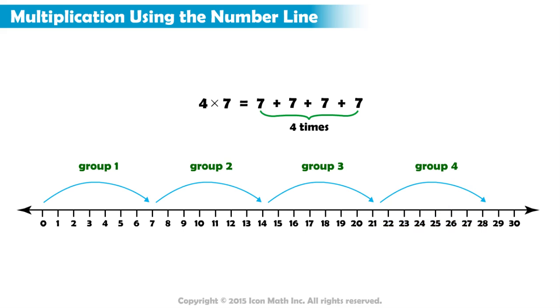Notice that our arrow ends at 28. So the product of 4 times 7 is 28.